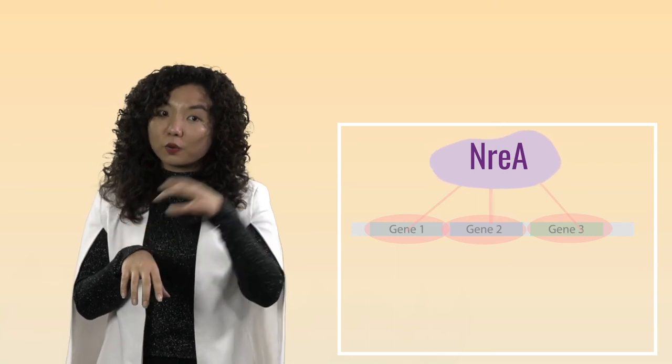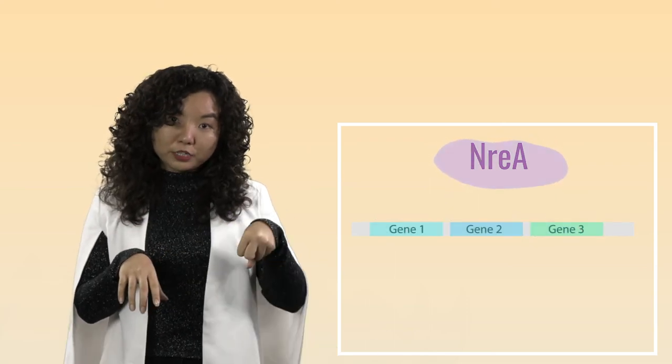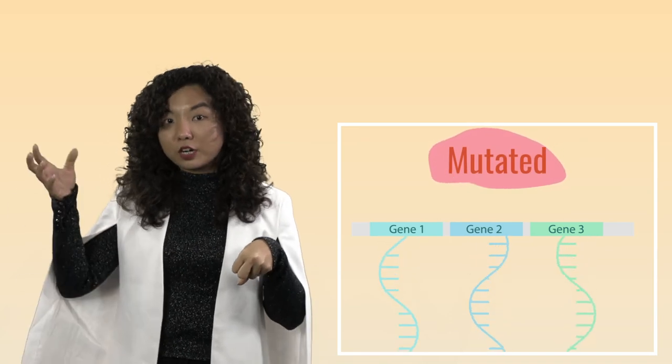So if the repressor gene cannot work properly due to a mutation, then there would be an increase in the products of its target gene.